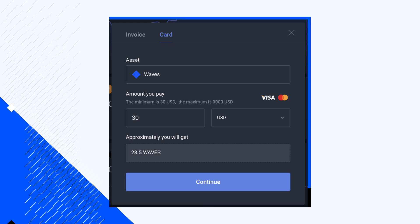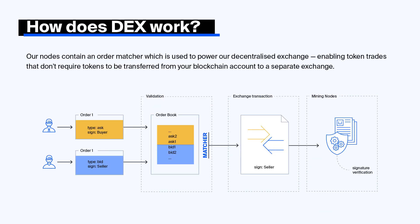More details about gateways can be found in the WAVES documentation — you can find the link in the description below. You can use WAVES tokens or gateway tokens to trade on WAVES DEX. The WAVES decentralized exchange supports many crypto assets, with more than 31,000 available pairs right now.